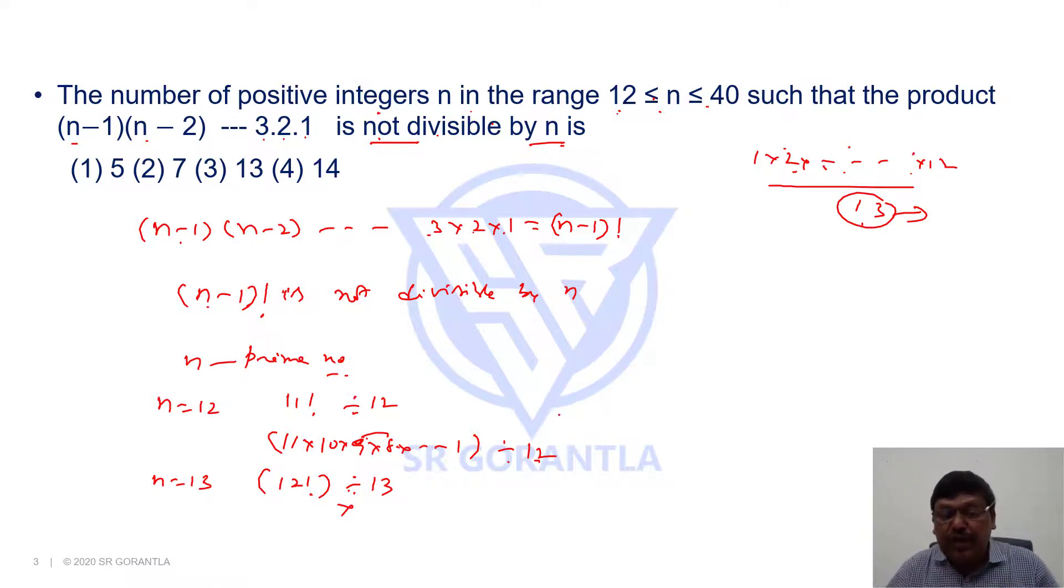13 is a prime number and a prime number cannot be obtained by a combination of any other two numbers, whereas 12 is a composite number. It can be obtained by a combination of two or more numbers, but it is not divisible by n when n is a prime number.